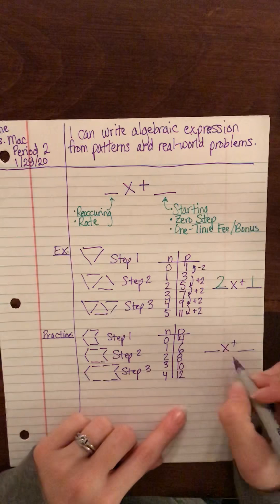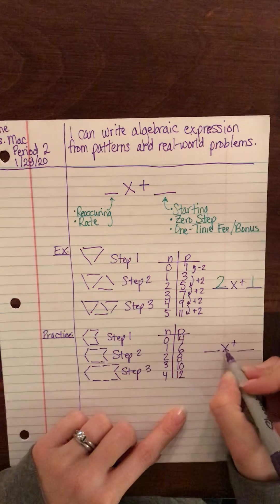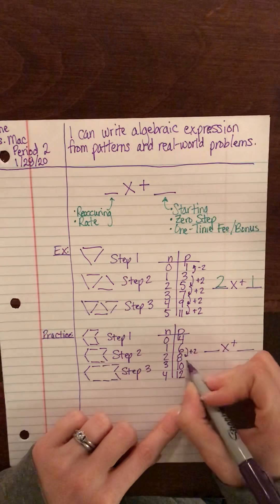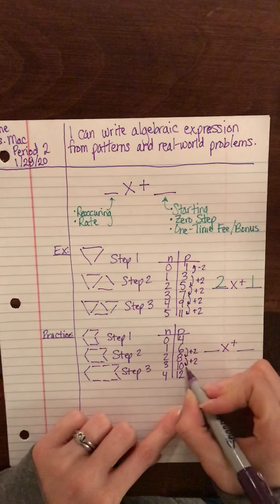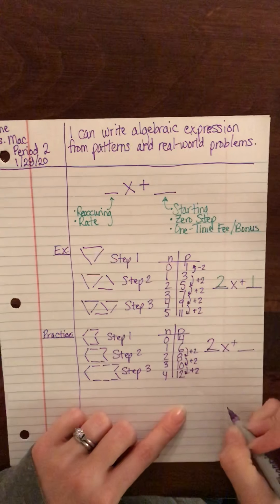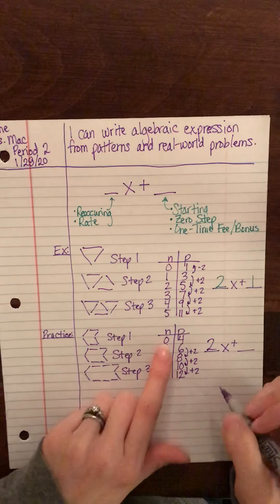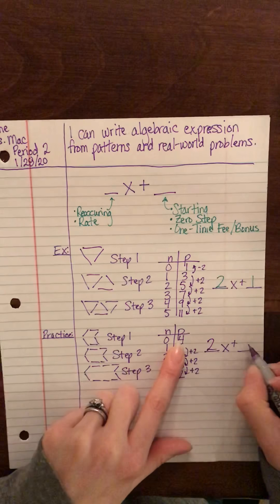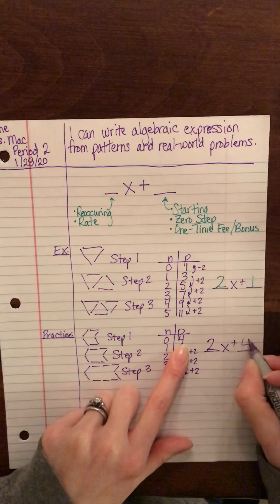So remember that in front of what's being multiplied by your x is your reoccurring number, so you're adding two each time, so we want the reoccurring number to be two. And your starting point is at your zero step right here, so that means that we should add four.